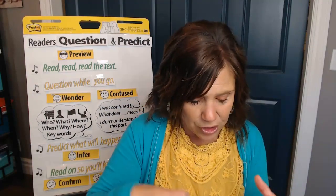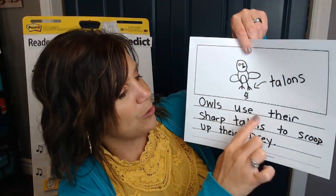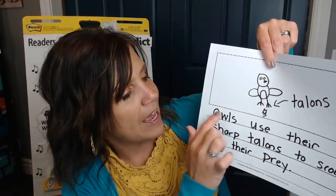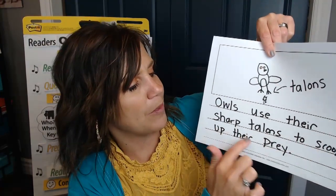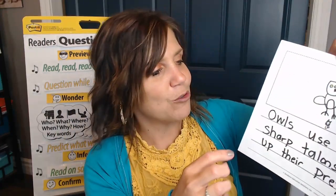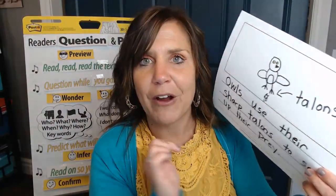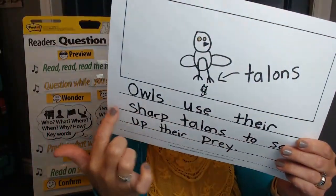Or if I wanted to write a sentence about what 'talons' means — I know talons are sharp claws used to catch their prey — I could write: 'Owls use their sharp talons to scoop up their prey,' because he's getting ready to scoop it up, and prey are the animals they eat. In that sentence, you can figure out what 'talons' means — it's their sharp claws, used to scoop up their prey. So you could do a picture and just label 'talons' with an arrow, or readers can write sentences.